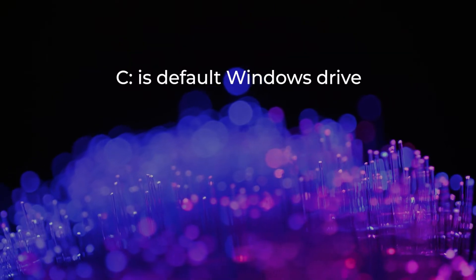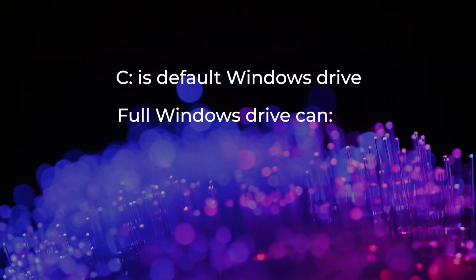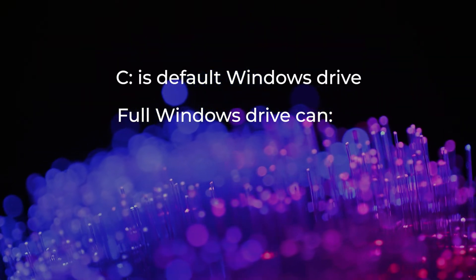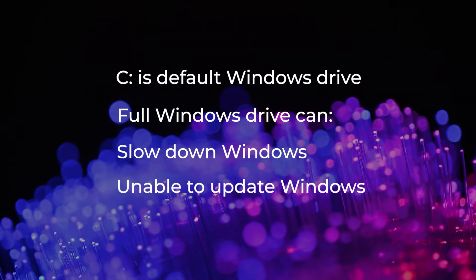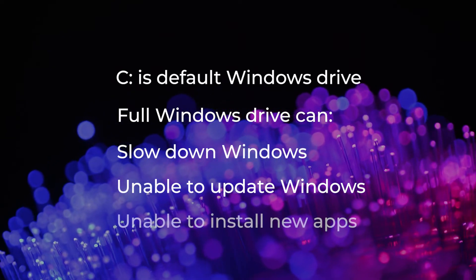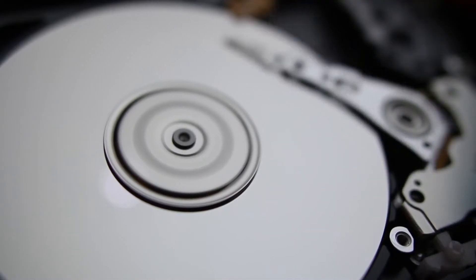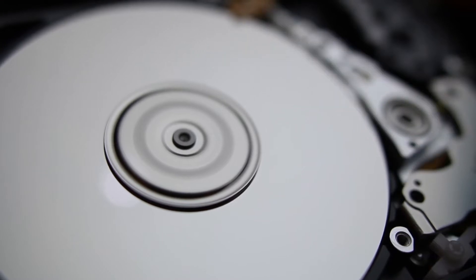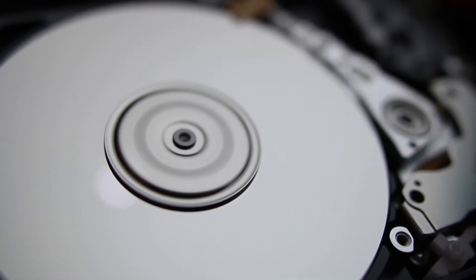C Drive is most commonly the Windows operating system drive, and if it's full you'll have a bunch of problems — such as Windows slowing to a crawl, being unable to update Windows with important security updates, and not being able to install new apps. For optimum performance it's best to have at least some free space on hard drives, and SSDs work fastest when they have at least 50% free space on them.